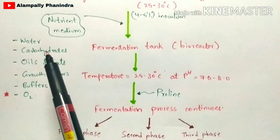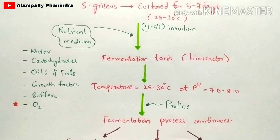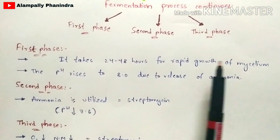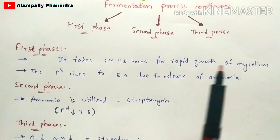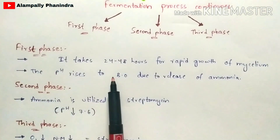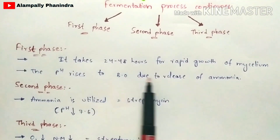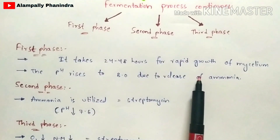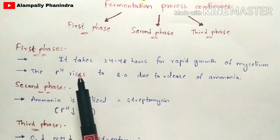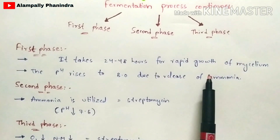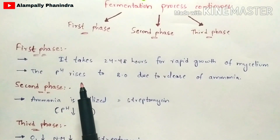By utilizing the nutrient medium added during fermentation, the bacteria undergo cell division, leading to rapid growth of mycelium and an increase in their number. As the rapid growth of mycelium occurs, the pH also rises to 8.0 due to the release of ammonia. This is an important point to remember: once rapid mycelium growth increases, ammonia release also increases, causing the pH to rise.